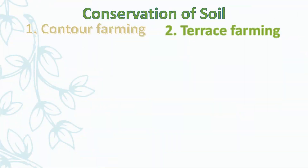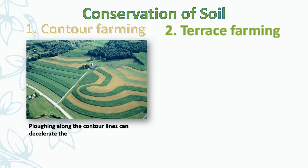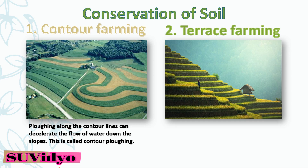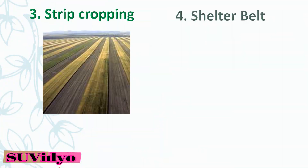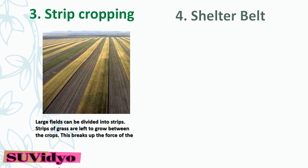Conservation of soil: the book describes four types of soil conservation measures. First is contour farming — plowing along the contour lines can decelerate the flow of water down the slopes. Second is terrace farming — steps cut on slopes make terraces that restrict erosion. Third is strip cropping — large fields are divided into strips with grass left to grow between crops, breaking the force of wind. Strip cropping differs from contour plowing in that strips are relatively larger in size.